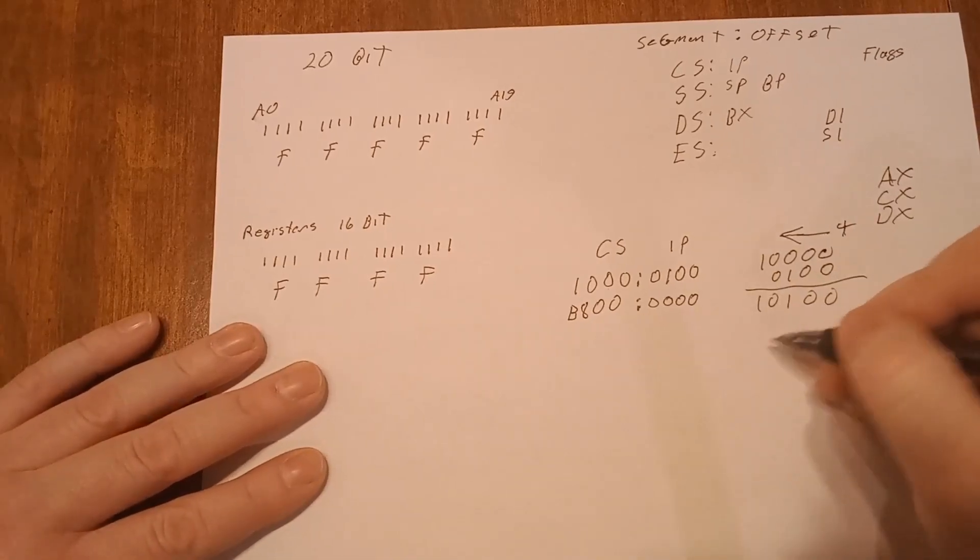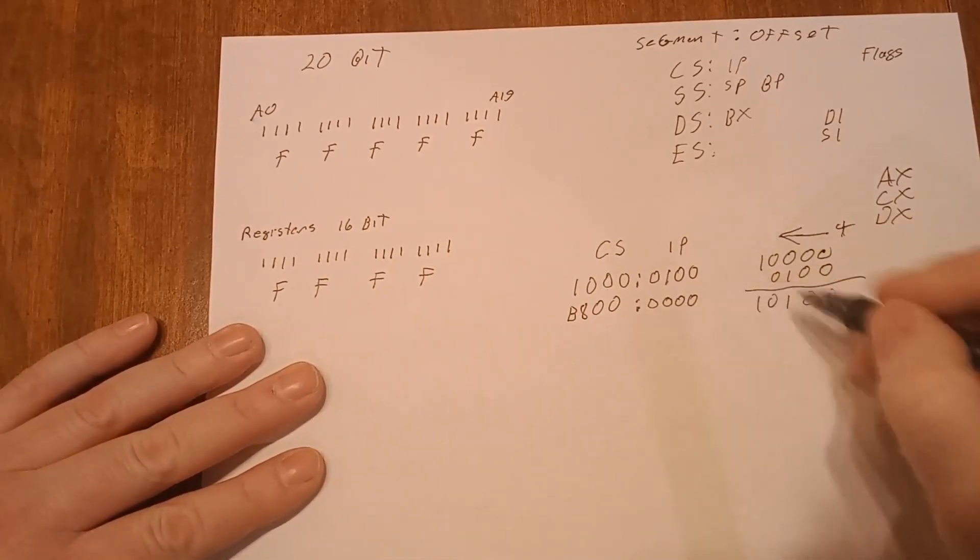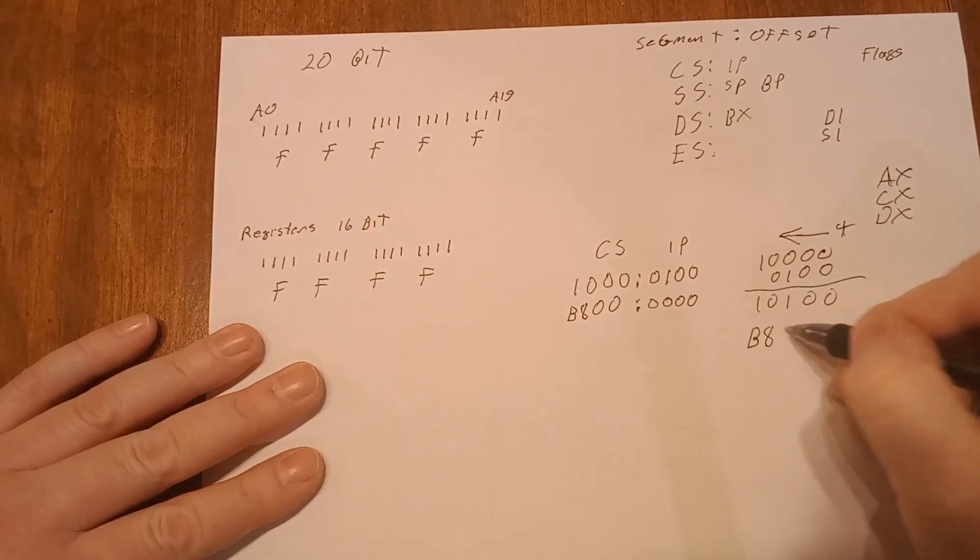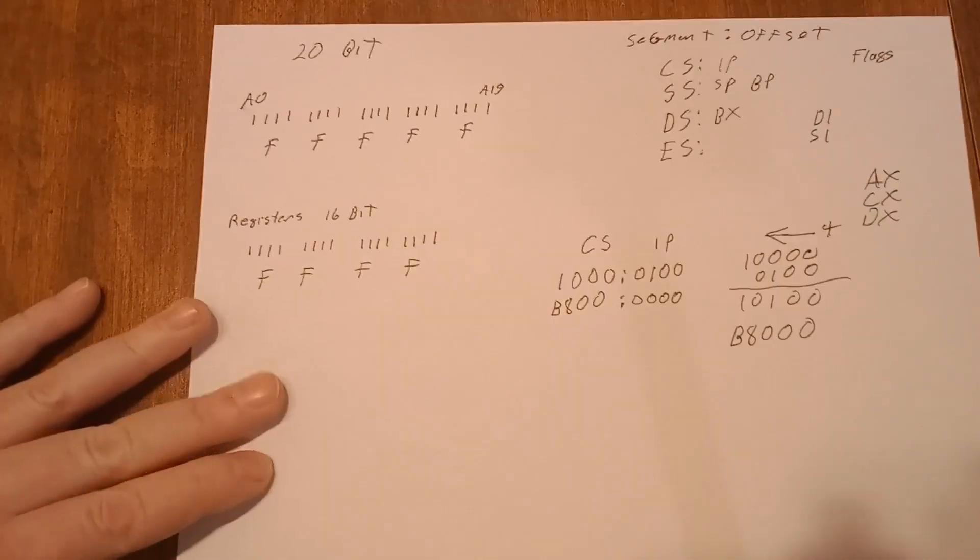And so you would add that up and that makes your 20 bit address. Same with your video. I mean, this one's real easy to figure out. It just becomes B eight zero zero zero.